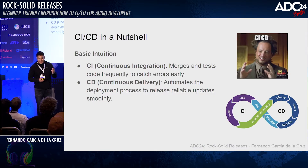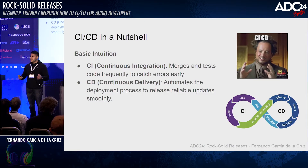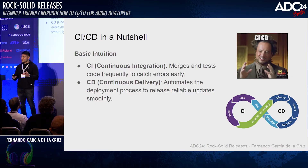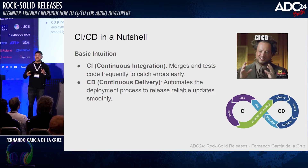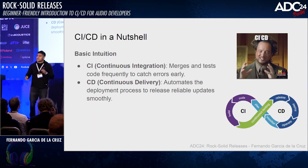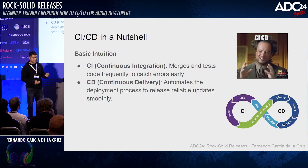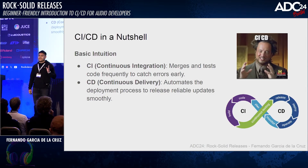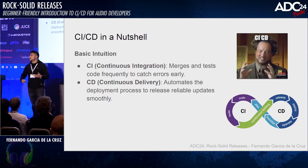We need to start by defining CI/CD in a nutshell. This is an oversimplification because it's quite a broad topic. We can think of continuous integration as the actions we do in order to constantly merge into our main codebase and run tests in order to catch bugs early. And continuous delivery is the actions you do in order to deploy your plugin — to make a version of your software that you can share with clients.